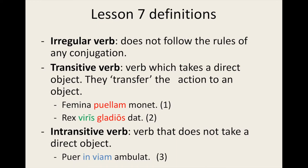Take a look at examples 1 and 2. I have highlighted the direct objects in red. Example 1 reads: 'The woman warns the girl.' Puellam, the direct object, is in the accusative. The accusative case is used to mark the direct object of a transitive verb. Let's move on to example 2: Rex, viris, gladios, dat. Rex is the Latin word for king or ruler.